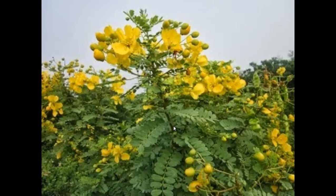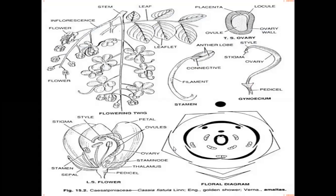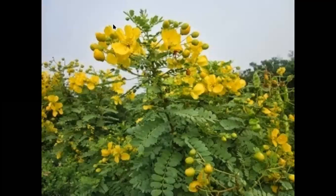Leaves are petiolate with a swollen leaf base that looks like a cushion-like structure. Leaves are stipulate — stipules are modified into spines in Parkinsonia, and modified into ear-like structures in Cassia auriculata.